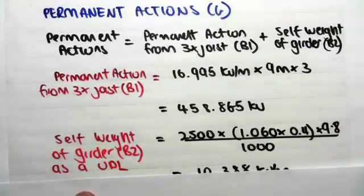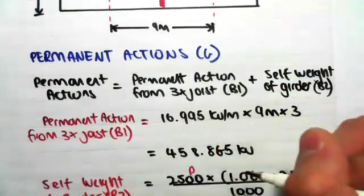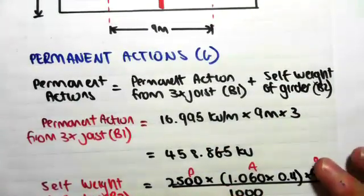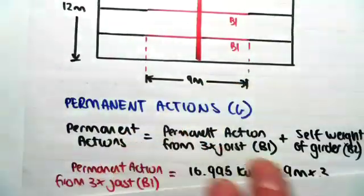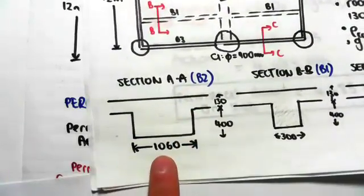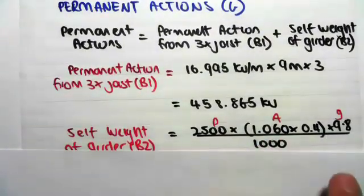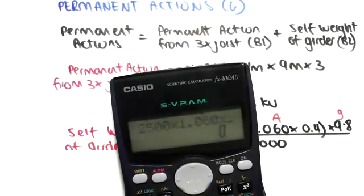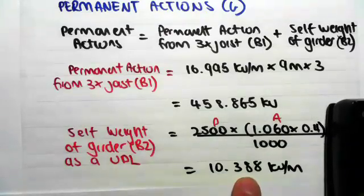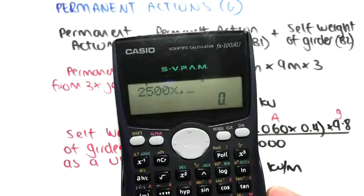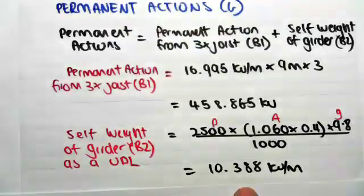The self-weight of the girder as a UDL. As always, it's density × area × gravity ÷ 1000, giving kilonewtons per meter. The density is 2500. For beam B2, the section is 1060 × 400, so the area is 1.060 × 0.4 m². So 2500 × 1.060 × 0.4 × 9.8 ÷ 1000 = 10.388 kN/m.